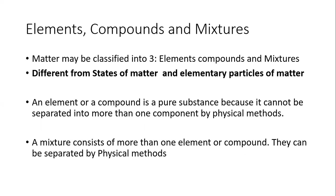Let's move on to elements, compounds, and mixtures — we are still talking about the nature of matter. Matter has mass and occupies space. It undergoes physical or chemical changes and has properties. Matter contains particles — atoms, molecules, and ions. Matter may be classified into three: elements, compounds, and mixtures. Everything we have is either an element, a compound, or a mixture. They can be in three states — solid, liquid, or gas.